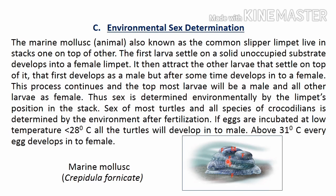This process of first becoming male then converting into female continues for all larvae stacking one over the other, and the topmost larva always develops into a male. The position at which larvae are settled determines whether they develop into male or female. Another example of environmental sex determination is in turtles and crocodiles: if fertilized eggs are incubated below 28°C, all eggs develop into males, but when incubated above 31°C, all eggs develop into females.